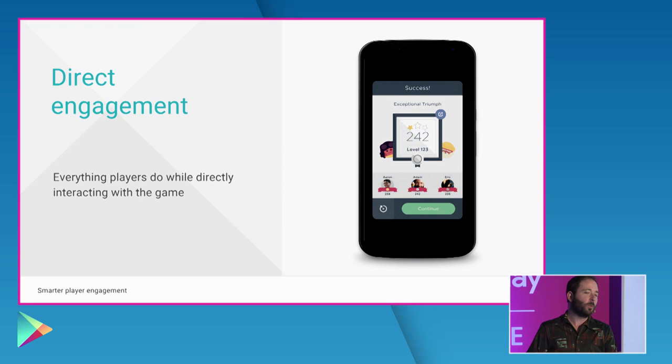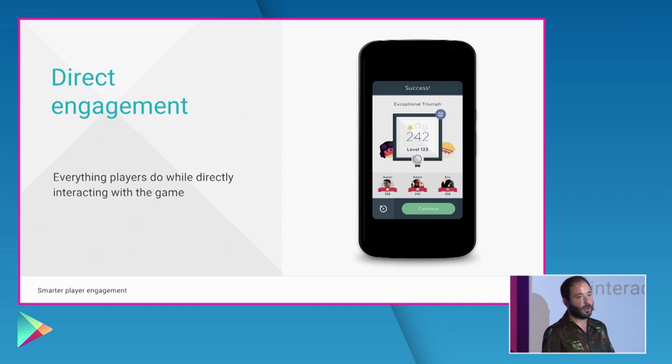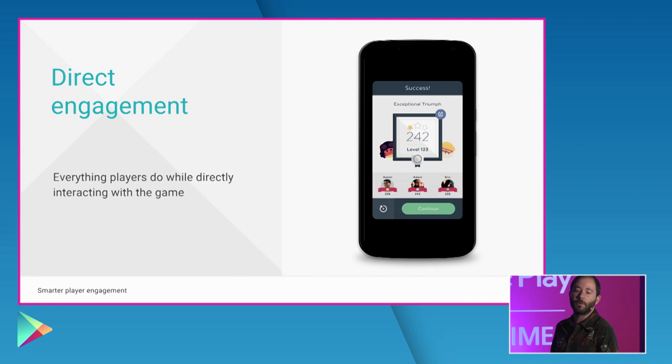There are actually two types I want to talk about. The first type is direct engagement. This is the one that we see on a pretty much daily basis, and it's kind of the obvious one. It's when people are actually using and playing your game. This is a game called Two Dots — this is right after I finished level 123. This is direct engagement. It's very straightforward. It's everything players do while directly interacting with the game. But there's a second type, and I just wanted to call it out now because it's also very, very critical. I call it community engagement.